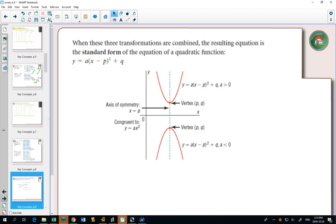All of this leads to something that we call the standard form of the equation. And the standard form is y equals a times (x minus p) squared plus q. So I'm going to put a box around that.